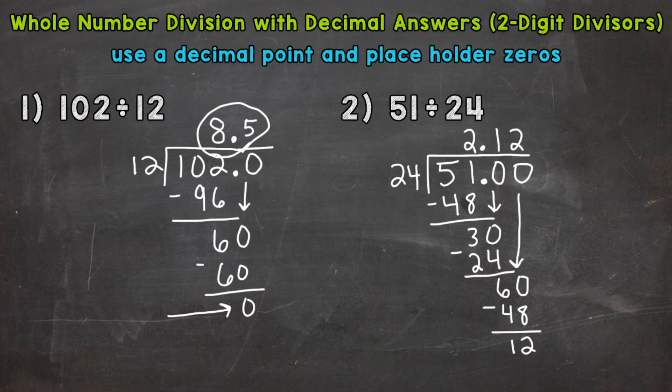We'll need another placeholder zero to bring down. Remember, we're going until we get a zero. Bring that down. We end up with 120. How many whole groups of 24 can we pull out of 120? Let's try 5 and see how close we get, because I know that 20 times 5 is 100, and 24 rounds to 20 as far as rounding to the tens place. So let's try that out. 24 times 5.